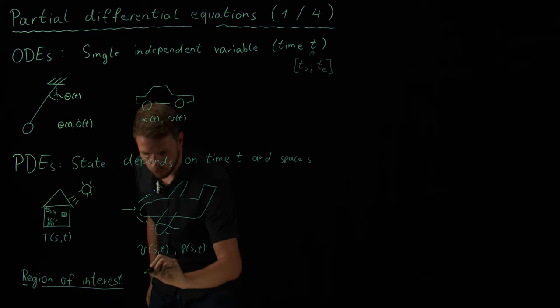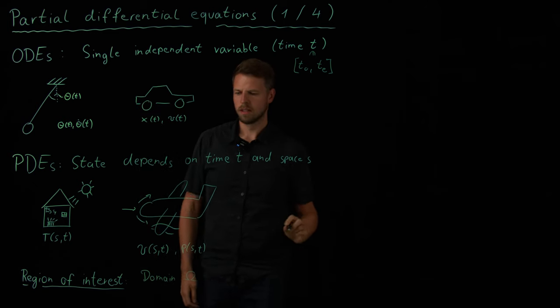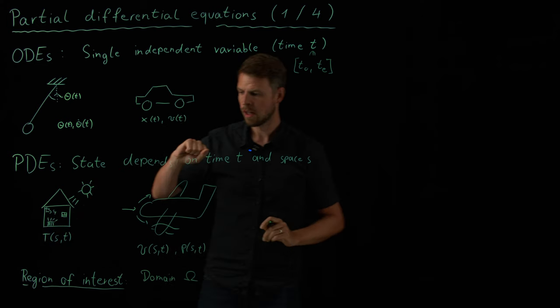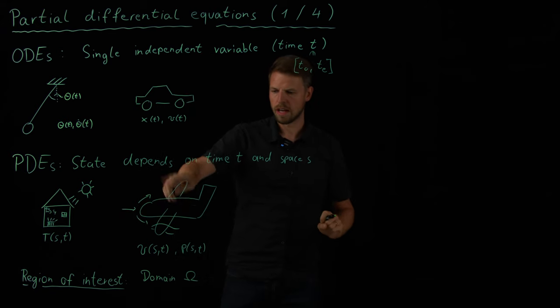Now we have to define something else or something similar for the position. So what we usually say is we have a domain, which we denote by omega. So in my heating example, this is my living room. Or in this aircraft example, this would be the air surrounding the aircraft.